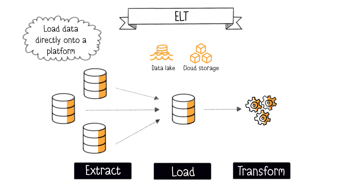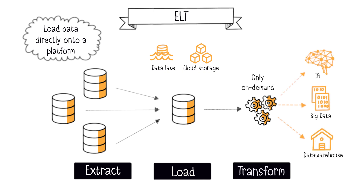It can also involve storing data in intermediary storage in the cloud, often object storage such as AWS S3, Azure Blob Storage, or Google Cloud Storage. Transformation occurs only when necessary, often on-demand and based on specific analysis requirements.